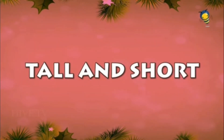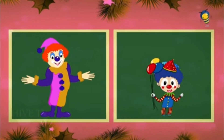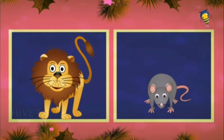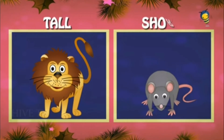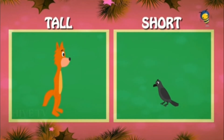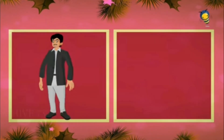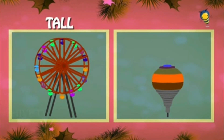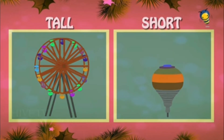Tall and short. Joker is tall and crown is short. Lion is tall and mouse is short. Fox is tall and crow is short. Man is tall and the boy is short. Wheel is tall and top is short.